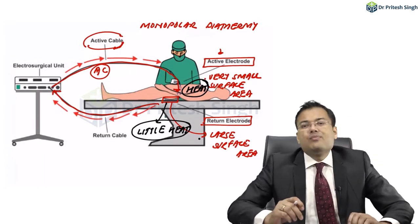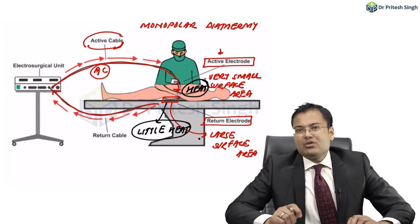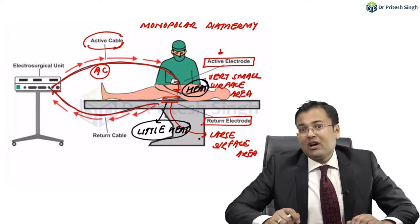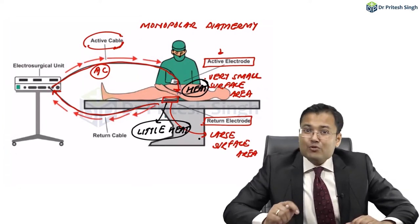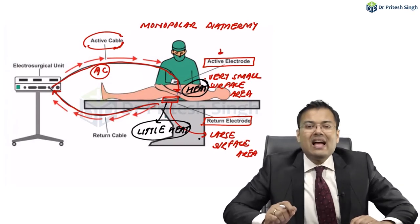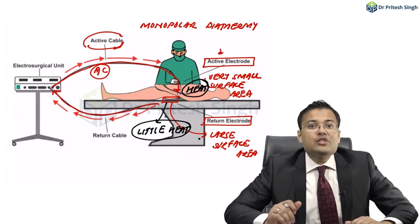The heat produced at the active electrode is responsible for denaturation of protein, and that is used for cutting and coagulation of the tissues.